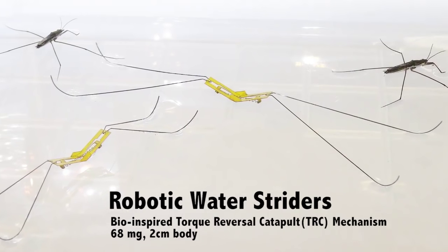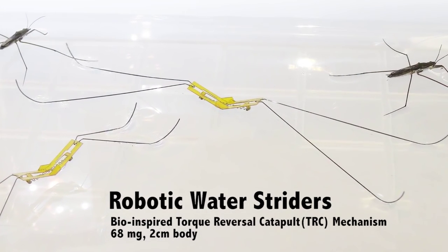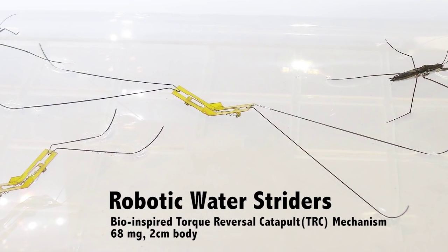As researcher Kyu-Chin Cho explains, 'What was very important for us while building the water jumping robot was to make sure that the maximum force does not exceed the maximum surface tension force.'